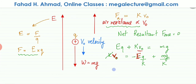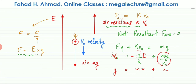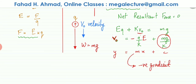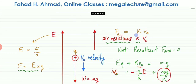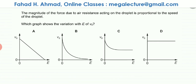This equation can be written in the form Y = MX + C, where V₀ is Y, E is X (the variable), C = Mg/K (a constant), and the gradient M = −Q/K. Since Q and K are both constants, the gradient is negative. This means V₀ versus E is a straight line with a negative gradient. Looking at the graph options, only option A is a straight line with a negative gradient, so option A is the correct answer.